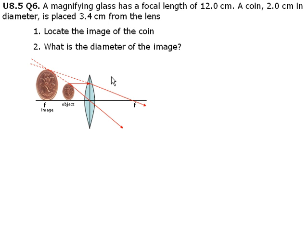Here is our ray diagram. Note how the object is placed in front of the focal point, since 3.4 cm is closer to the lens than the focal length of 12 cm.